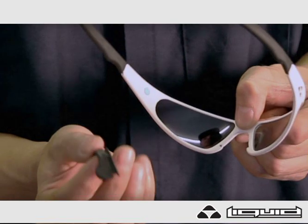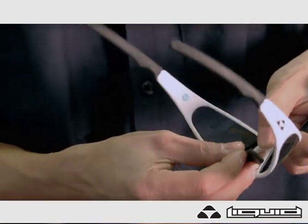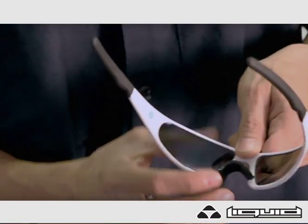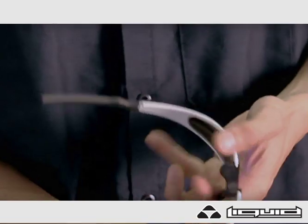For replacement, grab the sunglasses from the center of the bridge. Place one end of the nose piece into the bridge hook and press into place, making sure it seats tightly and fits behind the remaining bridge hook. It's that easy.